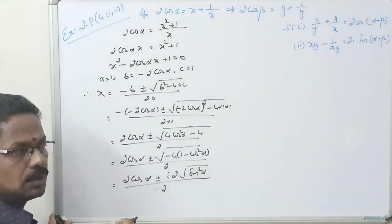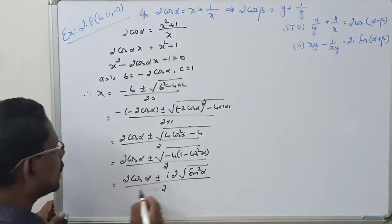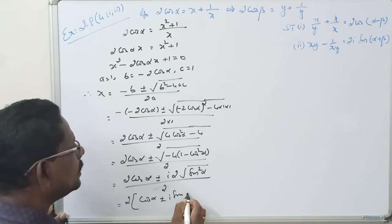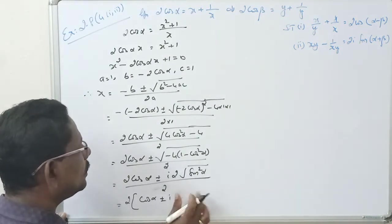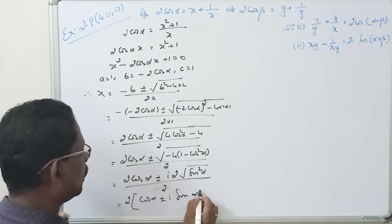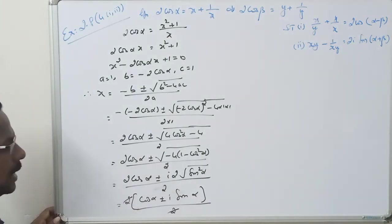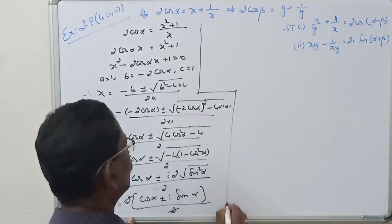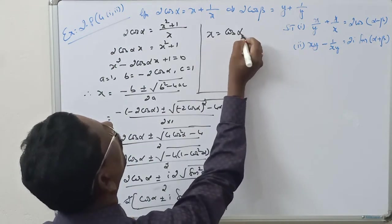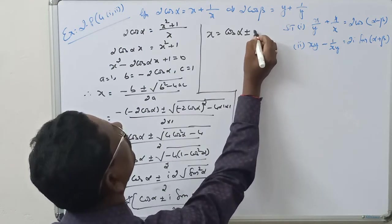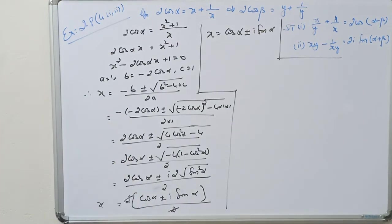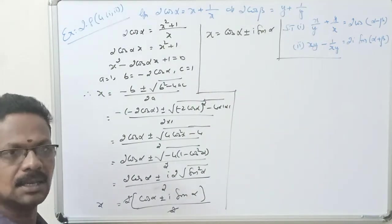Taking 2 outside: 2 into (cos α plus or minus i sin α), divided by 2. The 2s cancel. Finally, x is equal to cos α plus or minus i sin α.